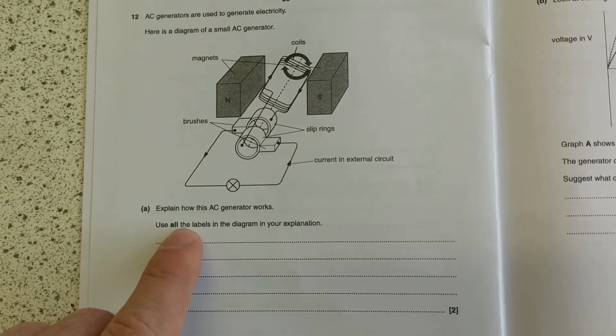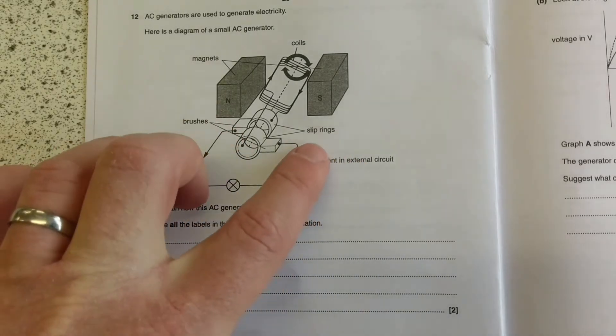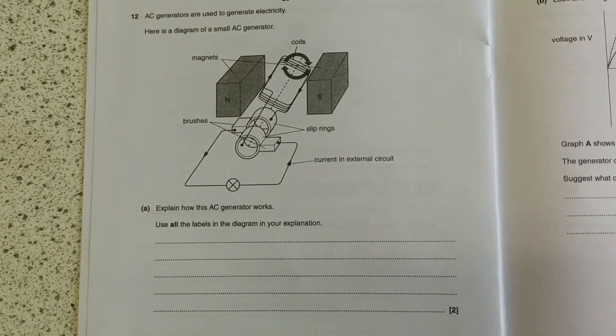It also says, use all the labels in the diagram of your explanation. So if it says that, and you haven't actually talked about slip rings and brushes, add it on. That's the type of thing you need to do when you're checking through, reading through your answers.